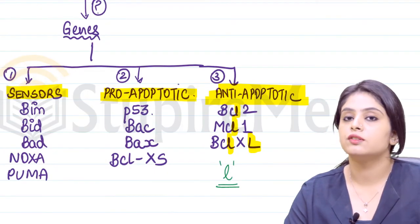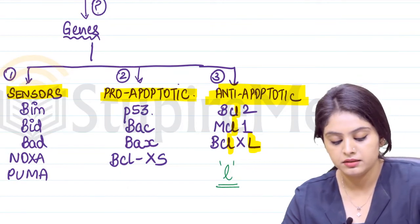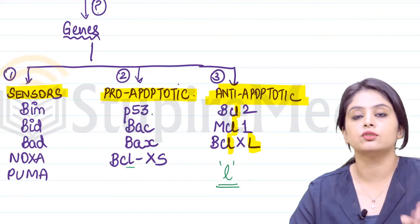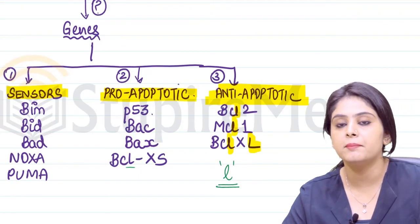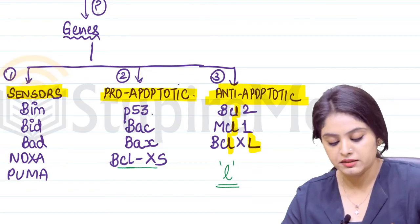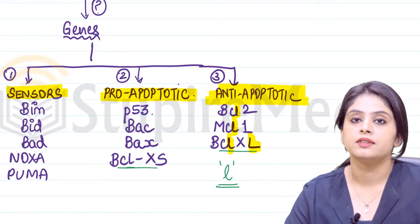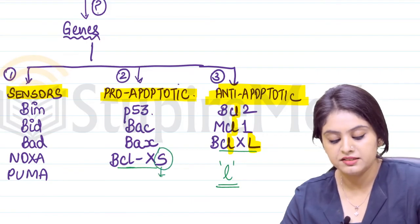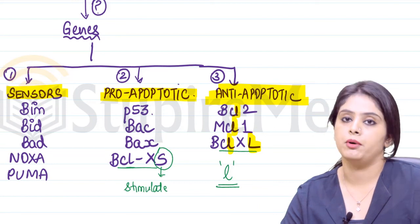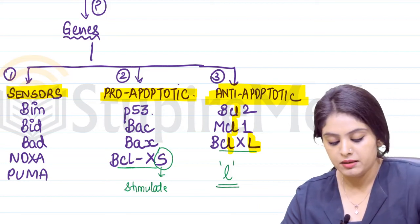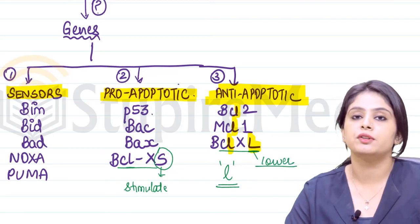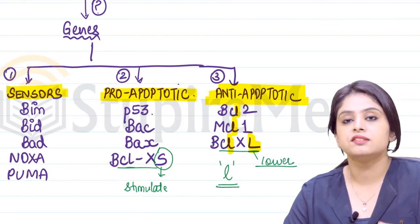Now which of these other proteins also has L? That is BCL-XS, but this is coming under the pro-apoptotic category. How will you avoid this confusion? One is BCL-XL and one is BCL-XS. S means stimulate, so stimulate means pro-apoptotic. L means lower, so it will be anti-apoptotic.